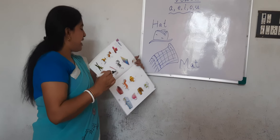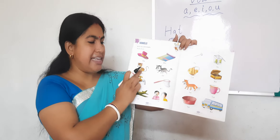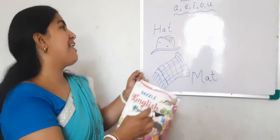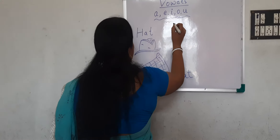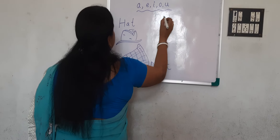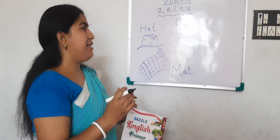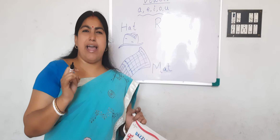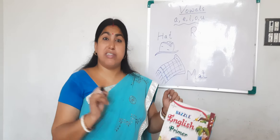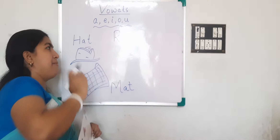Next — what is the next picture? Can you guess? Yes, it is a rat. R-A-T. Rat. You can find them in your house eating rice or leftover foods. It runs in the house at night. Yes, it is a rat.